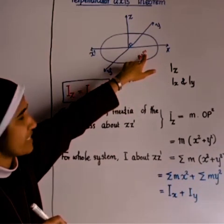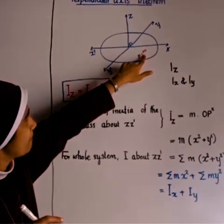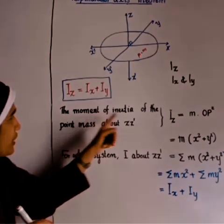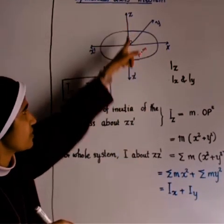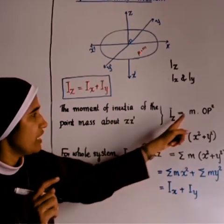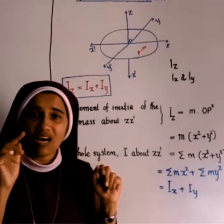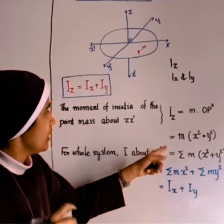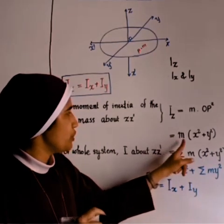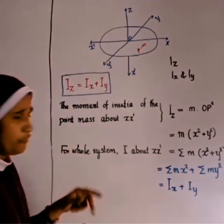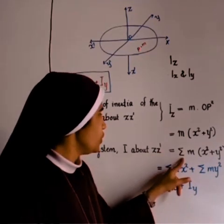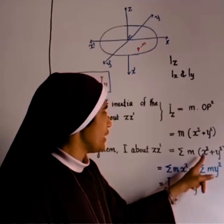Consider a point mass m at distance b from center O. The moment of inertia of this point mass about the central axis ZZ' equals m·OP². Using the coordinate of the point mass, this equals m·(x² + y²). For all point masses, the moment of inertia about ZZ' equals Σm(x² + y²), which gives Σmx² + Σmy².